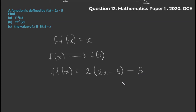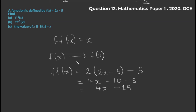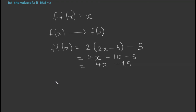Working this out: 2 multiplied by 2x gives 4x, and 2 multiplied by −5 gives −10, then we subtract the 5 outside. So f(f(x)) = 4x − 10 − 5 = 4x − 15. Now we equate this to x and find the value of x. We bring x over to one side.